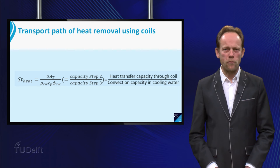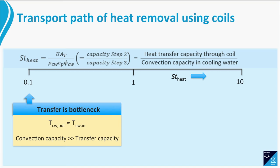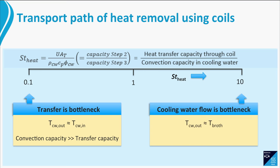In an ideal situation, the Stanton number should be close to 1. If it is much lower than 1, you have an overcapacity of the cooling water flow, meaning the temperature of the cooling water at outflow is not much different than at inflow. If the Stanton number is much higher than 1 — say about 10 — the opposite is true: there is a bottleneck in the cooling water flow and the outlet temperature approaches the temperature inside the fermenter. This also happens when the cooling area is too large compared to the flow of cooling liquid, for example when the coil is too long.